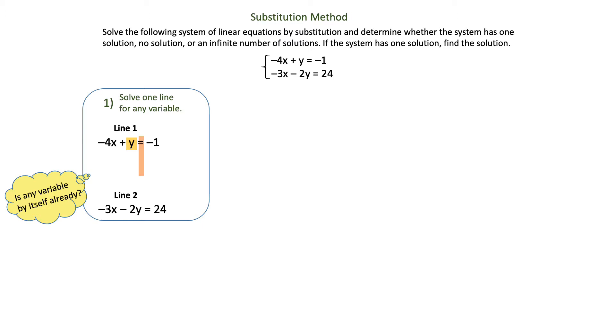I'm going to identify where my equal sign is and determine that I need to add 4x to both sides in order to solve for y. That will give me y equals 4x minus 1.